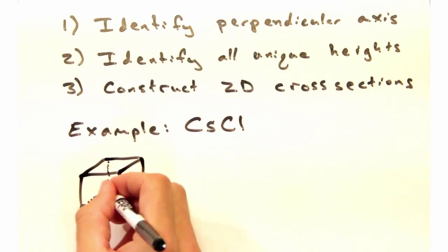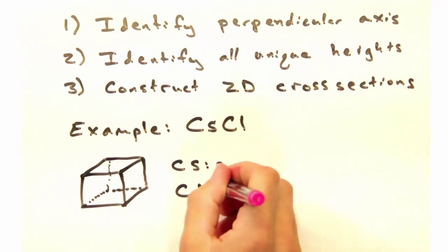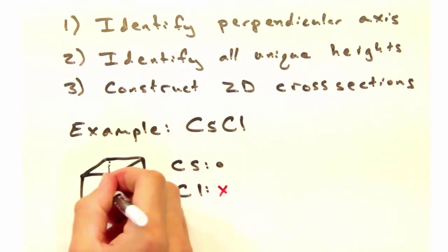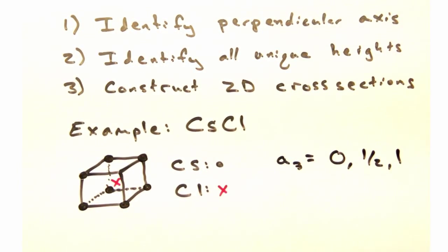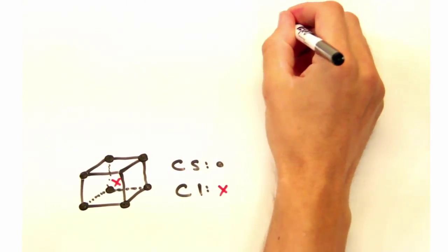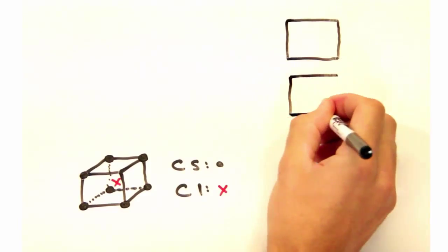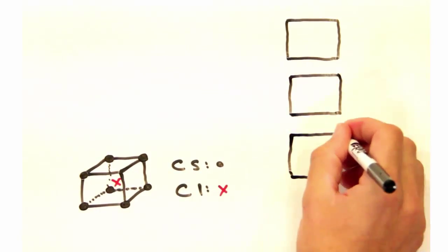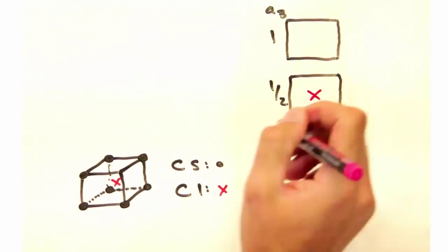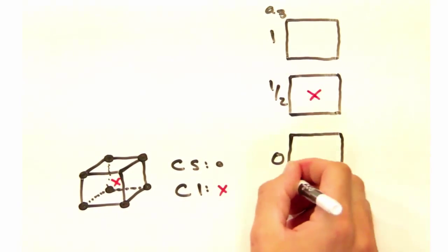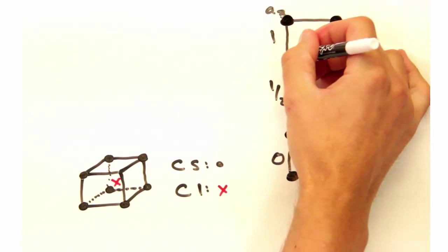Okay, let's start with a relatively simple example, cesium chloride. It has cesium atoms at all eight corners with a chlorine atom in the body center. Since we have atoms at A3 equals zero, a half, and one in reduced units, we'll create three cross-sections, one for each A3 height. Since cesium chloride is cubic, each cross-section is going to be a square. And once we have those, let's decorate those with atoms as so.